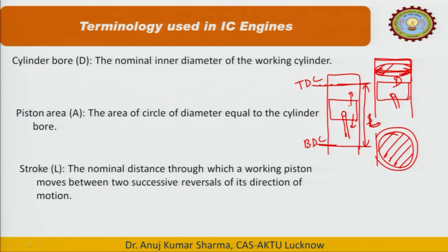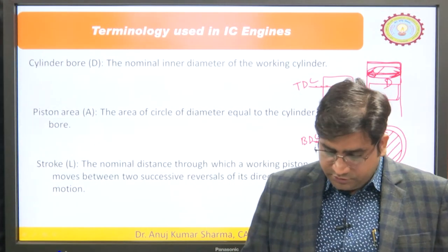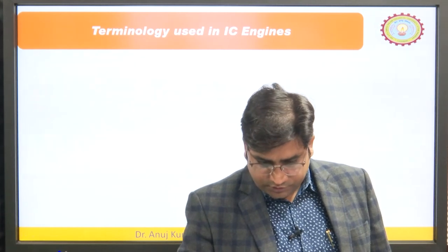For a two-stroke engine, completing one cycle means the piston travels two strokes — it goes up and comes down. For a four-stroke engine, to complete one cycle the piston must travel four strokes: TDC to BDC (1), BDC to TDC (2), TDC to BDC (3), and BDC to TDC (4). That is why it is known as a four-stroke engine.